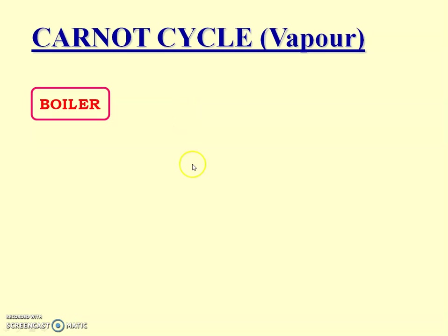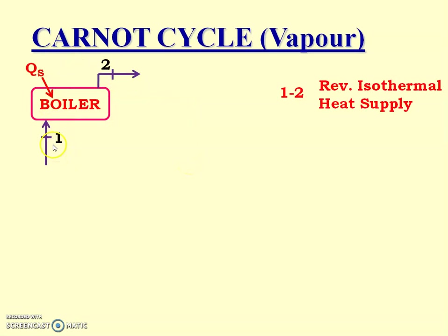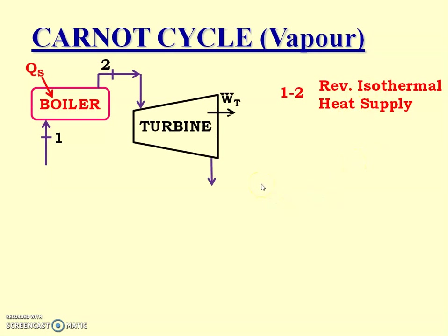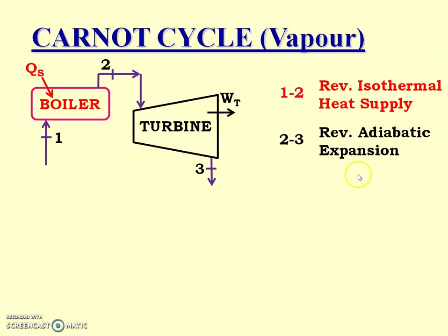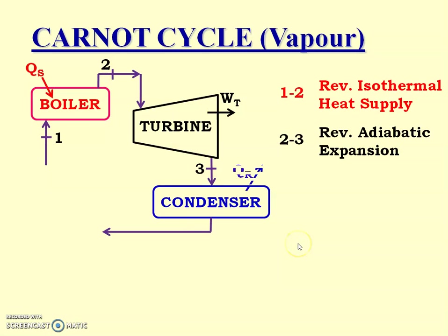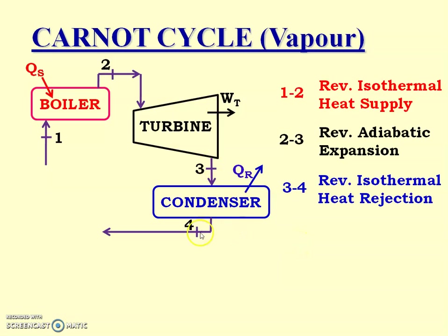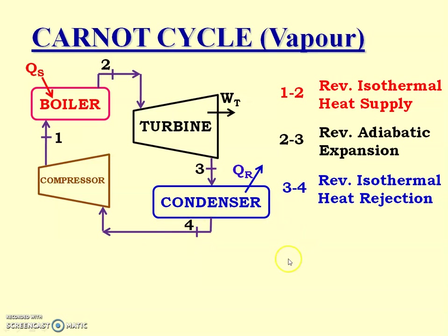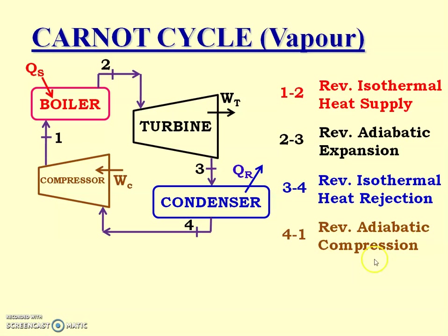Now let us draw it. In the boiler, heat is supplied and the state number is 1 to 2. Process 1 to 2 is known as reversible isothermal heat supply. Then it passes through process 2 to 3 in the turbine, which is known as reversible adiabatic expansion. Then process 3 to 4 is known as reversible isothermal heat rejection, where QR is the heat rejected. And process 4 to 1 is known as reversible adiabatic compression, where work is supplied to the compressor.